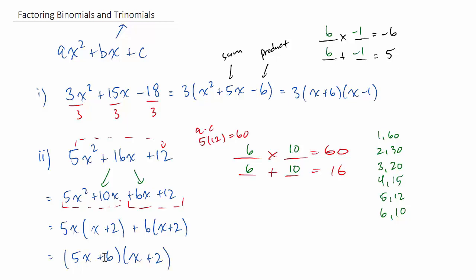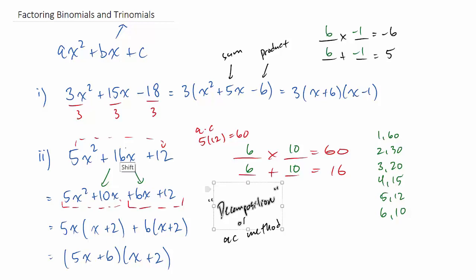This is a neat little method which basically allows you to factor out the common factors from each pair, bring it all together as (5x + 6) and (x + 2). Maybe pause it there and convince yourself with the FOIL principles why that's true. And you can always check your work by expanding out that last line. We sometimes call this the decomposition method because you have to break apart the 16x into two smaller terms.